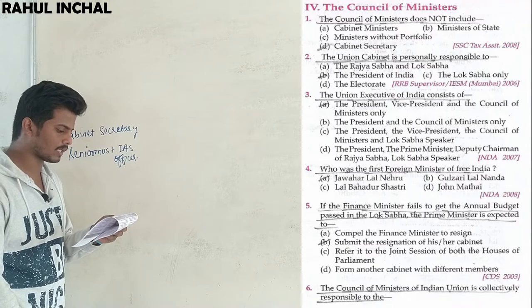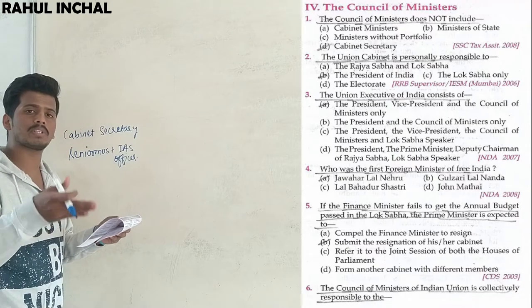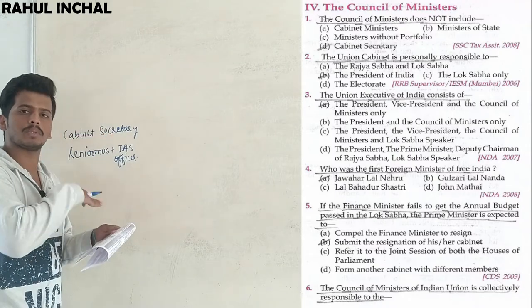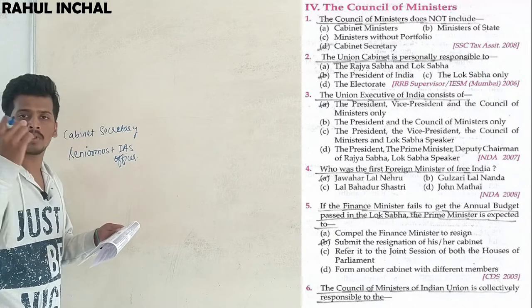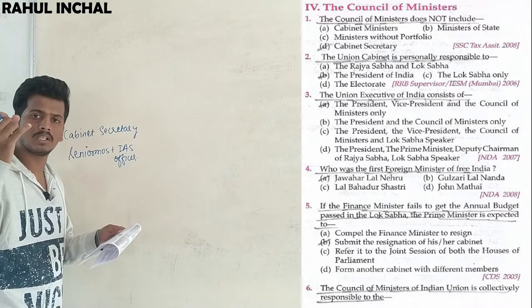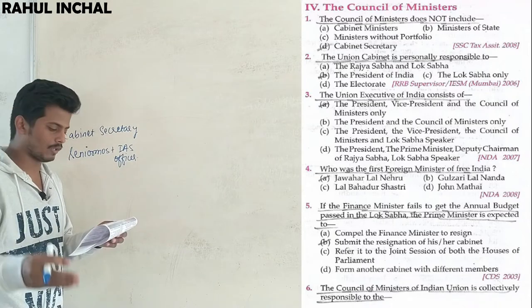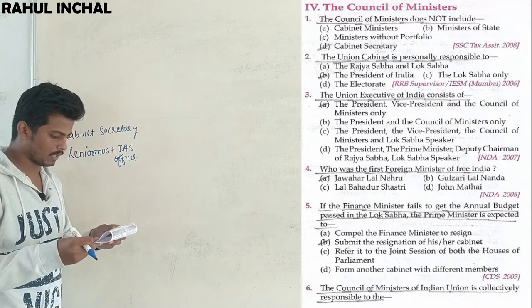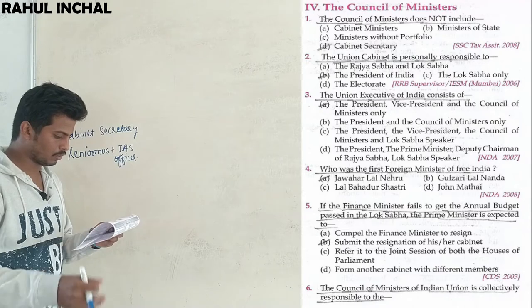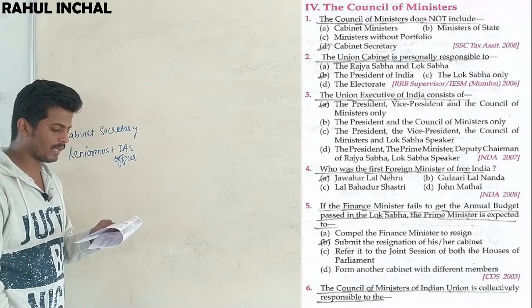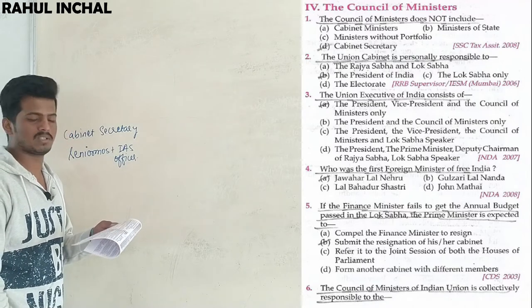The next question — the third question — is: the Union Executive of India consists of? This question also appeared in the previous video. The answer is: the President, the Vice President, and the Council of Ministers.